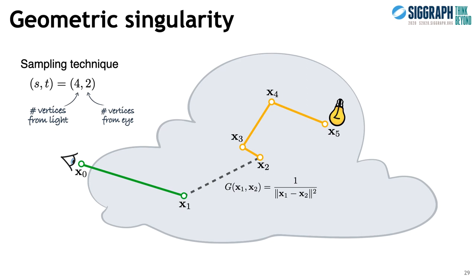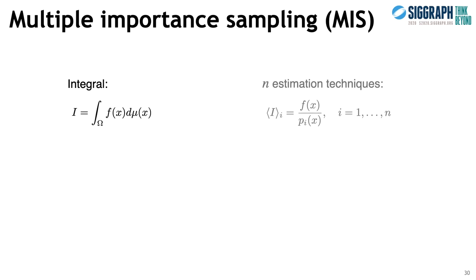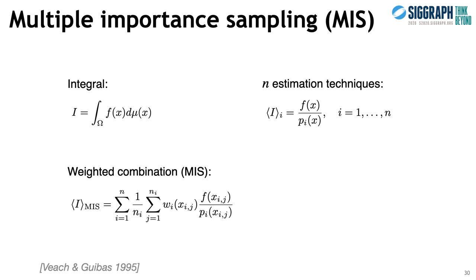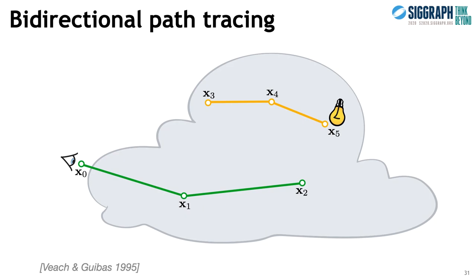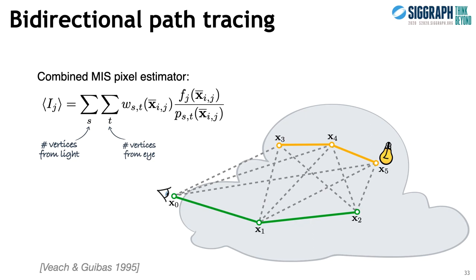To achieve this, we can use a framework called multiple importance sampling (MIS). Given an integral and a few techniques each with a corresponding estimator, MIS provides a combined estimator as a weighted sum. The key to achieving low variance is in the choice of the weighting function W. The balanced heuristic is a provably good choice, weighing techniques proportionally to their sampling density, or equivalently inversely proportionally to their estimates. Leveraging the power of MIS, the bidirectional path tracing algorithm considers all possible connection techniques and combines them via the balanced heuristic to preserve the advantages of each.